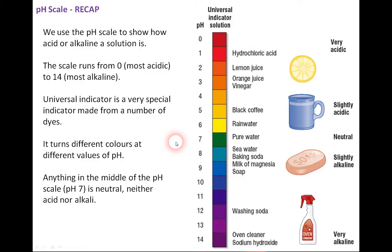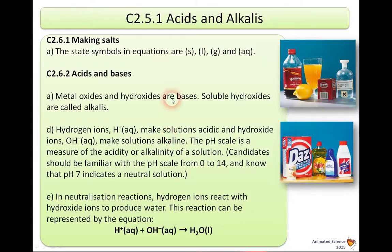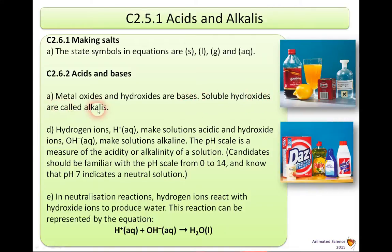So a simple scale from key stage three. In this unit we're going to look at acids and alkalis. There's a part from the making salts topic: state symbols in equations — solid, liquid, gas, and aqueous, meaning in water in Latin. The second part looks at metal oxides and hydroxides, which we call a base, and soluble hydroxides, which are called alkalis. We'll also look at hydrogen ions, H+, in water that make solutions acidic, and hydroxide ions, OH−, in water, that make solutions alkaline.